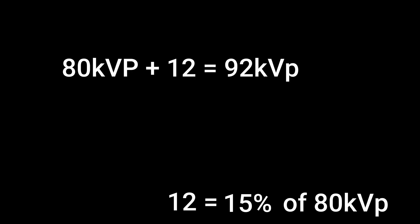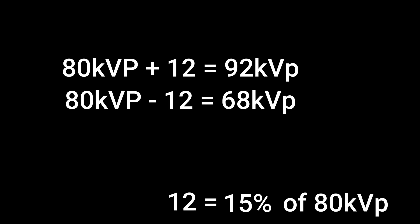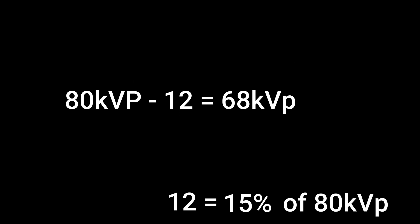Now let's work this out on a problem. If you have 80 kVp and you're increasing by 12, which is 15%, you have 92 kVp. If you have 80 kVp and you want to lower by 15%, you subtract 12 and you have 68 kVp.